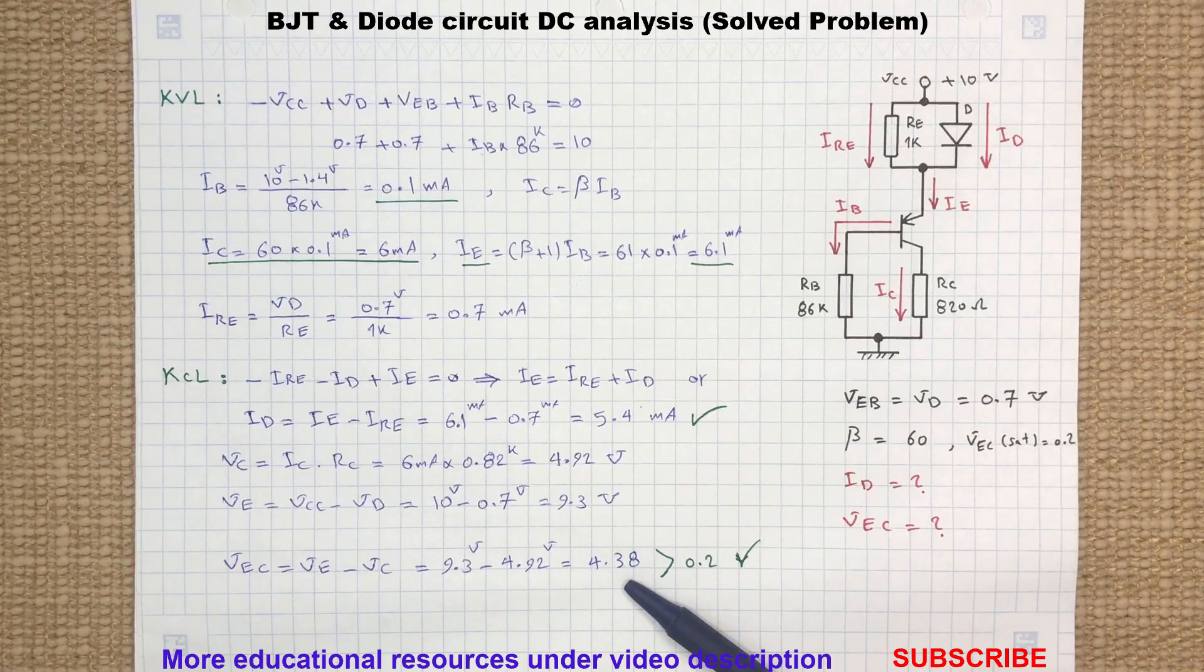As you can see here, this voltage is greater than 0.2 volt, which is the emitter-collector saturation voltage, so the result is acceptable.